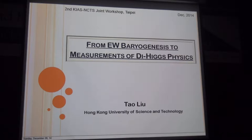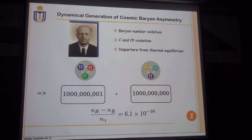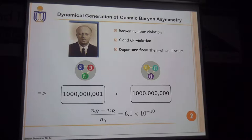My talk will start from one of the biggest puzzles in the universe: the cosmic baryon asymmetry. This cosmic baryon asymmetry has puzzled people for a long time. As Sakharov pointed out about half a century ago, if the so-called Sakharov conditions are satisfied, then the cosmic baryon asymmetry can be generated in a dynamic way. Following this line, various mechanisms have been proposed to implement this picture.